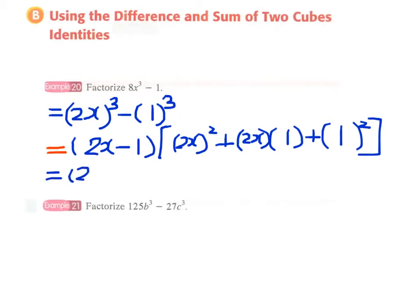And now we simplify the second factor. The square of 2x will be 4x squared plus 2x plus 1. And the second factor, in fact, cannot be further factorized because it is not a perfect square, nor can we use cross-method to factorize it. So this will be our final answer.